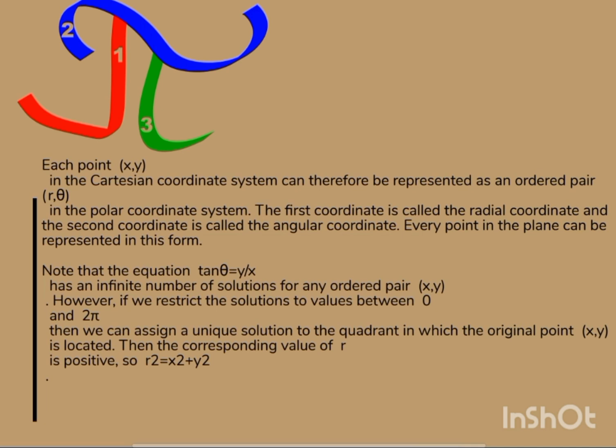Note that the equation tan θ = y/x has an infinite number of solutions for any ordered pair (x, y). However, if we restrict the solutions to values between 0 and 2π, then we can assign a unique solution to the quadrant in which the original point (x, y) is located. Then the corresponding value of r is positive, so r² = x² + y².